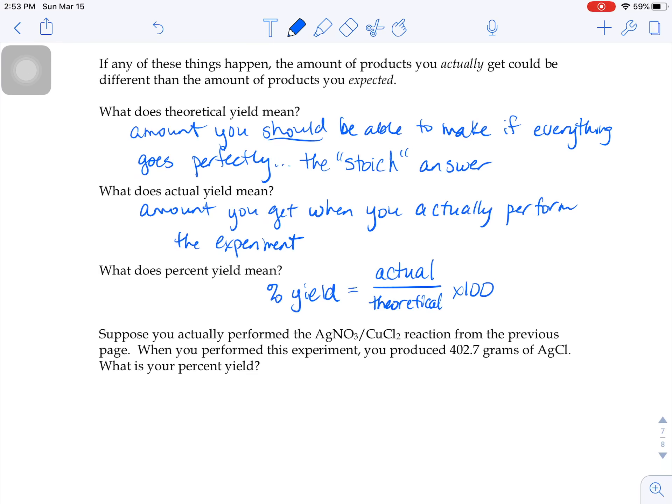You want your percent yield to be high. What that means is your actual number would be really close to what the theoretical stoichiometry would predict. You would want percent errors to be low.